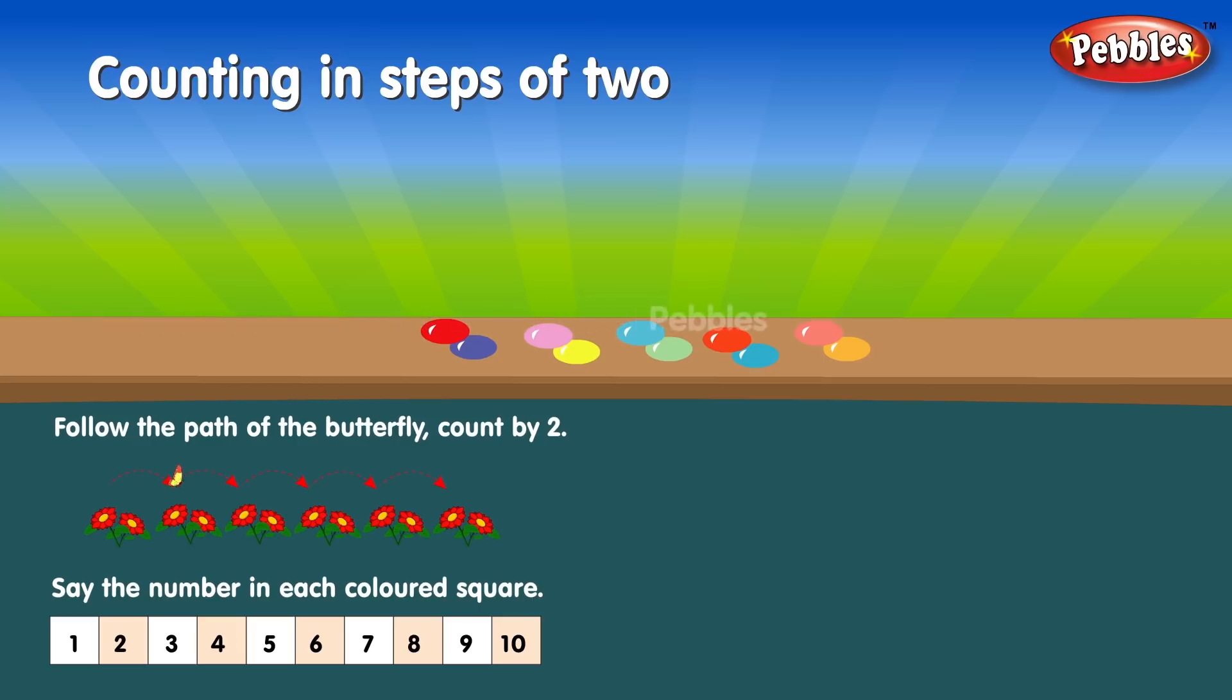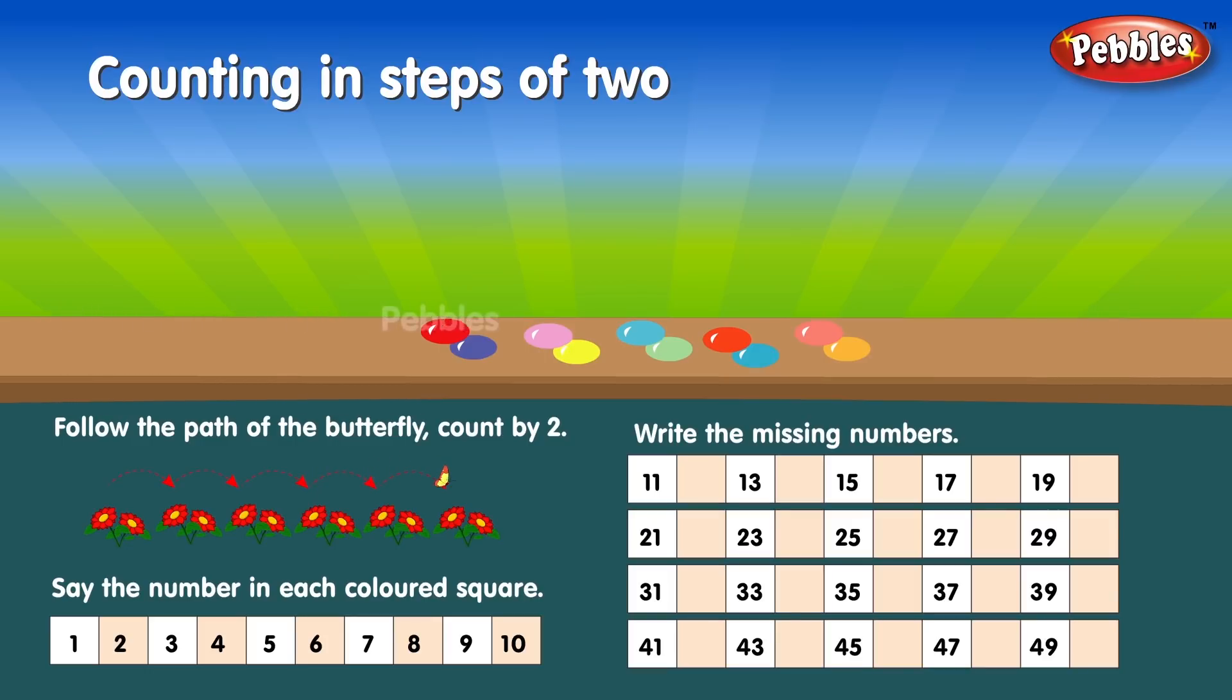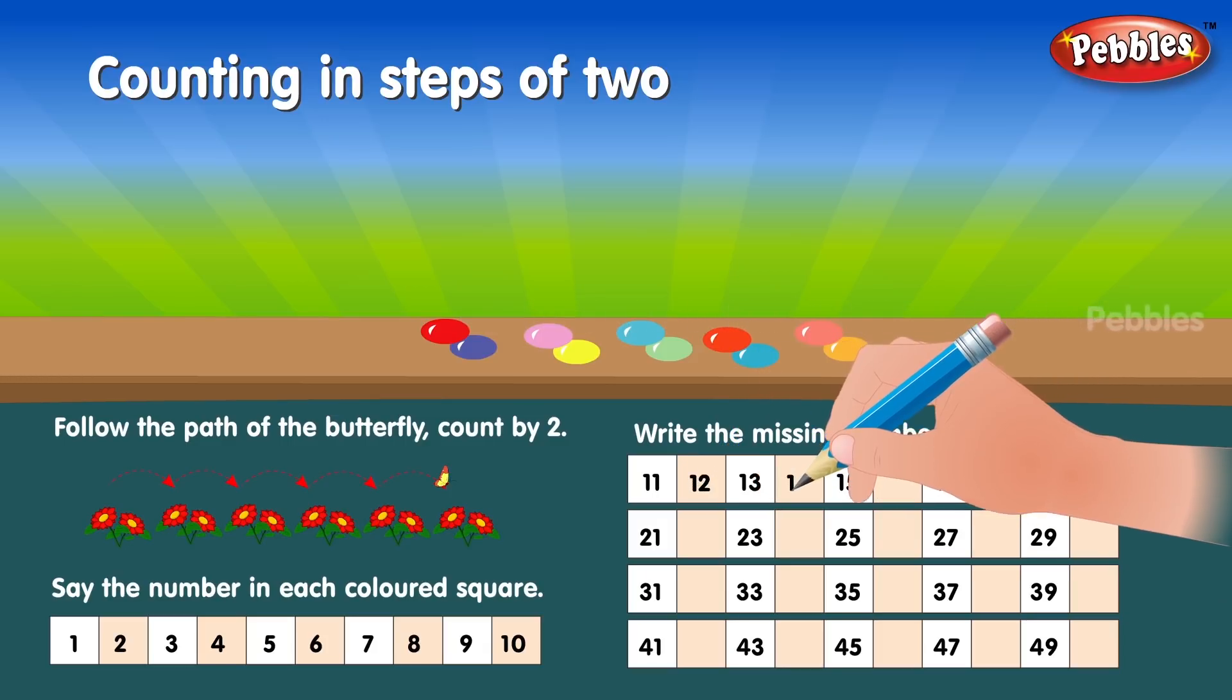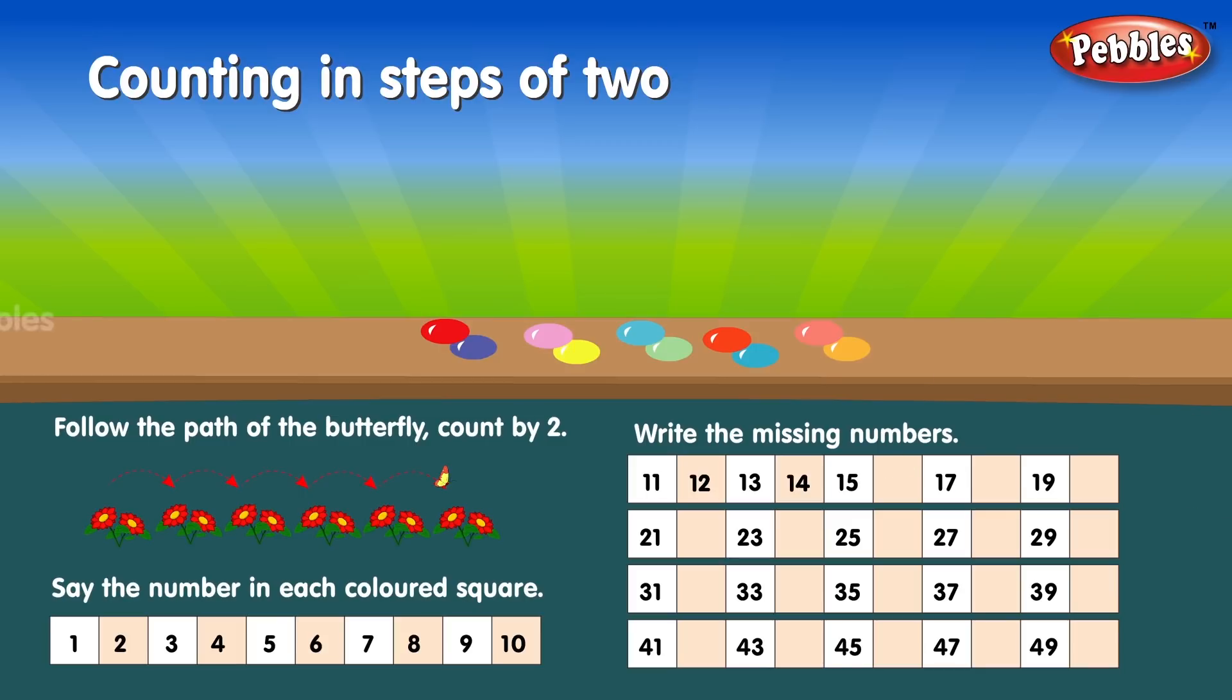2, 4, 6, 8, 10. Write the missing numbers. 12, 14, 16, 18, 20.